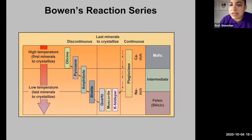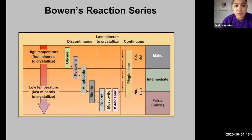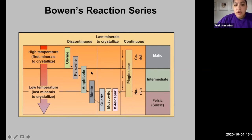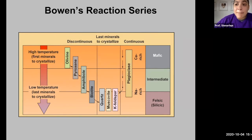Bowen's reaction series describes the first minerals that crystallize out of a melt, but it can also indicate which minerals would be the first to melt when a rock is placed in an environment under high temperatures and high pressures. So olivine would be the first mineral to crystallize out of a melt, while quartz, muscovite, and potassium feldspar would be the first minerals to melt if you were melting a source rock to create a magma.